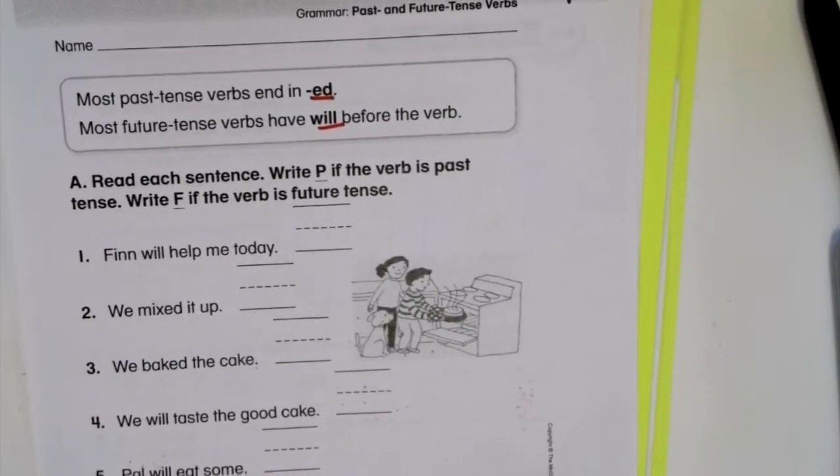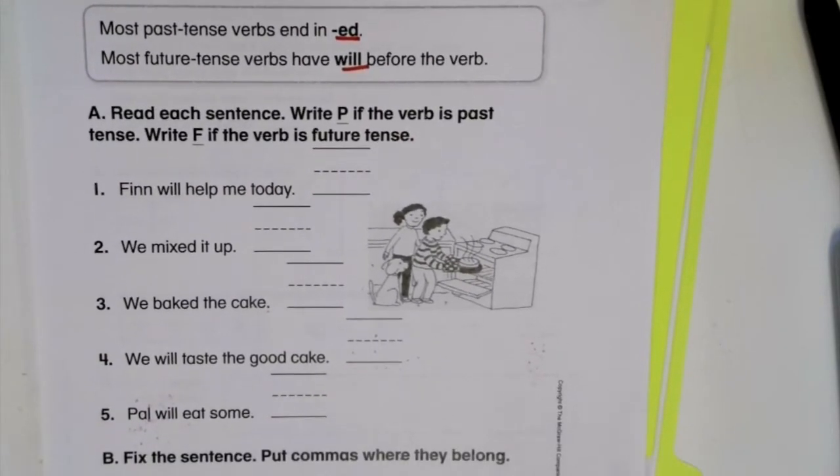Okay, so what we're going to do today is we're going to read the sentence. We're going to write a P if the verb is in past tense and an F if it's in future tense. So we have to find the verb, then we have to put a P if it's past and F if it's future. So let's go ahead and get started.